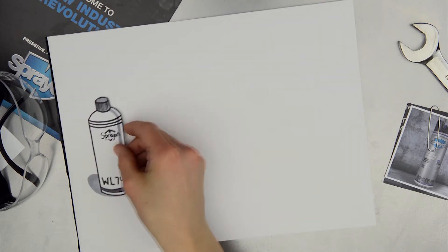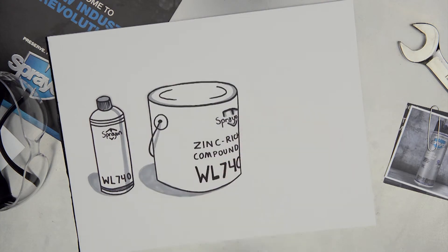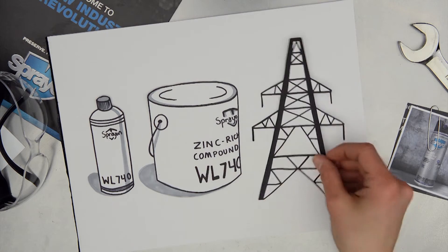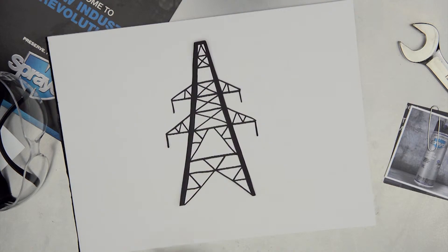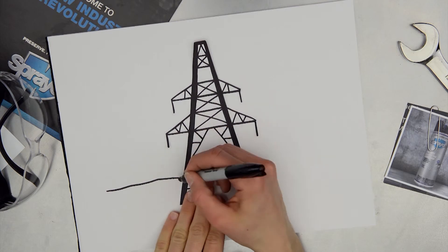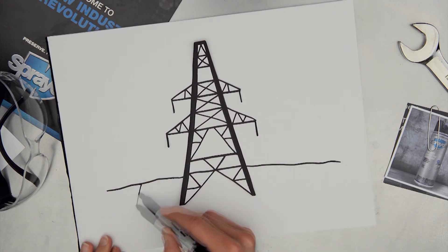SprayOn already offers this product in aerosol and bulk formations. But a deeper look into how WL740 could be used to maintain these towers revealed that many of the places where repairs take place are at or below grade, and are often very hard to reach with conventional application methods. Additionally, many towers are in rural areas where resources and maintenance supplies are limited.